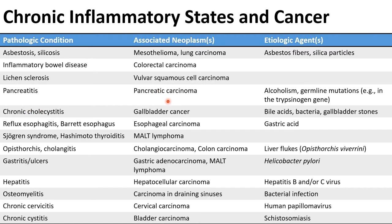Pancreatitis is associated with pancreatic carcinoma. Chronic cholecystitis with gallbladder cancer. Reflux esophagitis and Barrett's esophagus can cause esophageal carcinoma. Sjögren's syndrome and Hashimoto's thyroiditis are associated with MALT lymphoma (mucosa-associated lymphoid tissue). Opisthorchis-related cholangitis is associated with cholangiocarcinoma and colon carcinoma. Gastritis and ulcers are associated with gastric adenocarcinoma and MALT lymphoma. Hepatitis is associated with hepatocellular carcinoma. Osteomyelitis can be associated with carcinoma in draining sinuses. Chronic cervicitis is associated with cervical carcinoma, and chronic cystitis with bladder carcinoma.